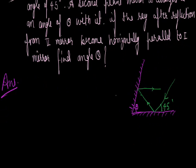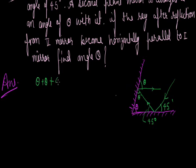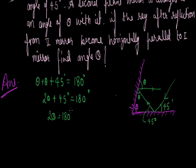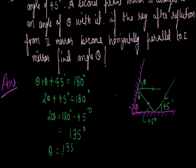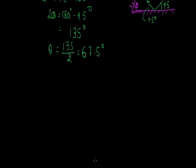For the first surface, the glance angle of incidence is 45 degrees, so the reflected angle will also be 45 degrees. Because this ray is horizontal, the alternate angles at the second mirror are both theta. If we consider the triangle formed, the total sum of angles equals 180 degrees. So: theta plus theta plus 45 degrees equals 180 degrees, giving 2 theta equals 135 degrees, so theta equals 67.5 degrees. The angle between the two mirrors is 67.5 degrees.